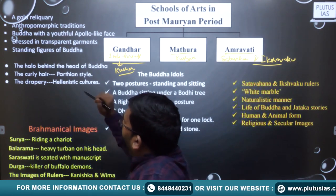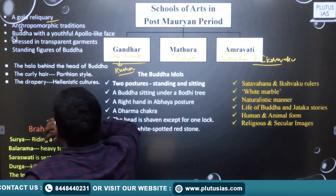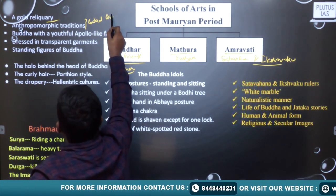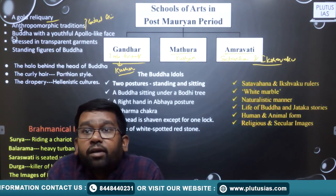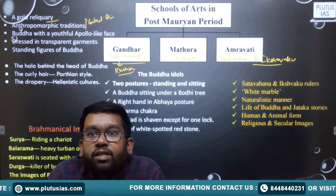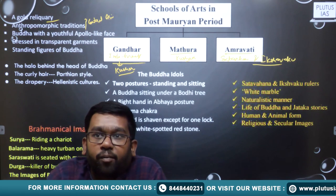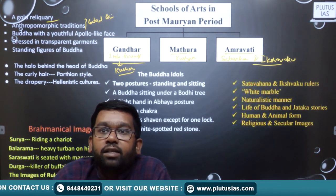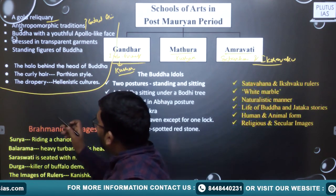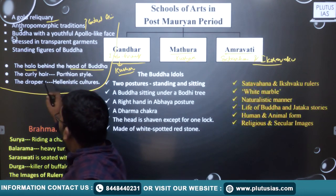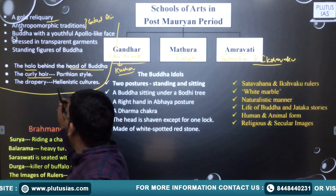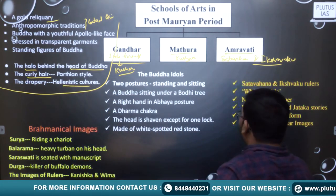In Gandhara art, we find a gold reliquary. An anthropomorphic tradition was followed from Central Asia to Gandhara. Buddha is depicted as youthful, like Apollo, who was represented as the youth god in the Greco-Roman empire. So Buddha is represented like one — dressed in a transparent garment. Standing figures of Buddha are found in the Gandhara school. A halo is found behind the head of Buddha, and curly hair in the Parthian style. Hellenistic cultural influences are seen in the Gandhara school.